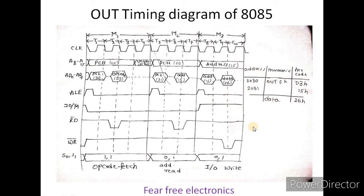After three machine cycles, the OUT instruction execution is complete. This is the timing diagram of OUT instruction for 8085 microprocessor. Please like, share, and subscribe. Thank you friends.